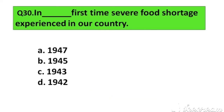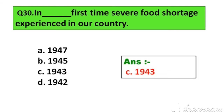Question number 30. In which year was the first severe food shortage experienced in India? Option A. 1947, B. 1945, C. 1943, D. 1942. The right answer is Option C. 1943.